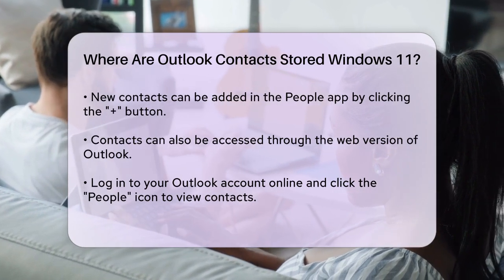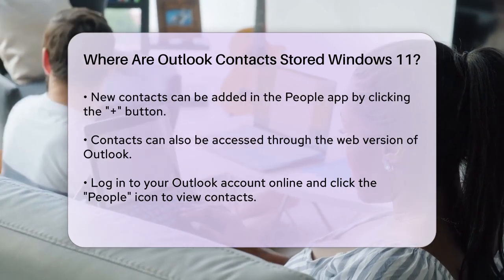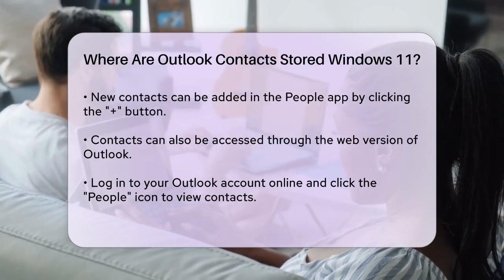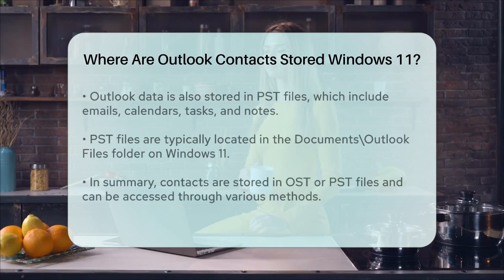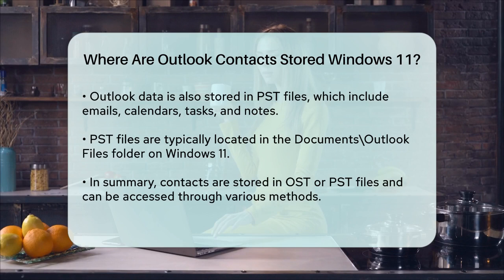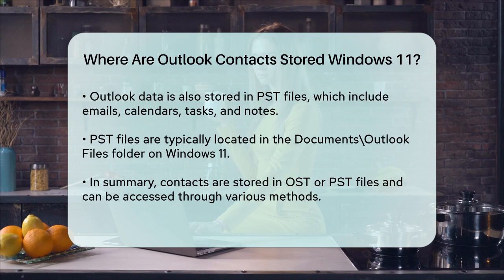Outlook also stores its data in PST files, which are the primary data files for Outlook. These files contain emails, calendars, contacts, tasks, and notes. By default, the PST file is stored in the Documents\Outlook Files folder on Windows 11.